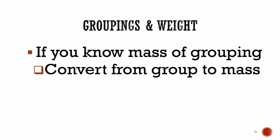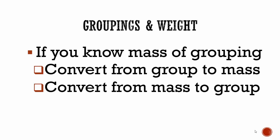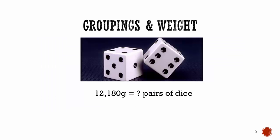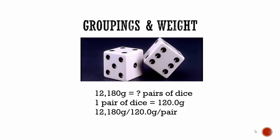If you know how much a grouping weighs, you can convert from group to mass by multiplying, and from mass to group by dividing. For example, suppose I handed you a pair of dice and told you that the dice weighed 120 grams. I then gave you 12,180 grams of dice — how many pairs of dice do you have? Write down what you're asked, write down what you know, and since you're going from mass to number, you divide: 12,180 grams divided by 120 grams per pair. The grams cancel out, giving you 101.5 pairs of dice.